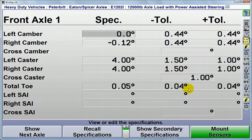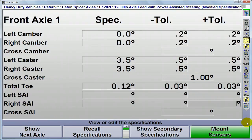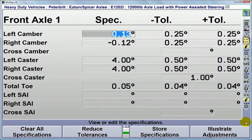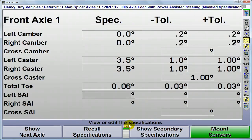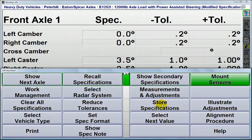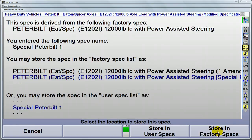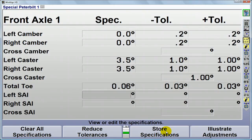If you feel the tolerances are too wide, merely select Reduce Tolerances. Plus, any edited set of specs can be saved for future use. Hunter's Spec Database feature will easily accommodate what works best for you and your customer.